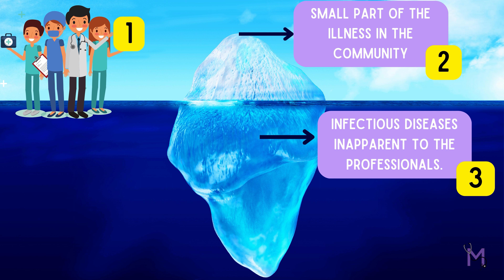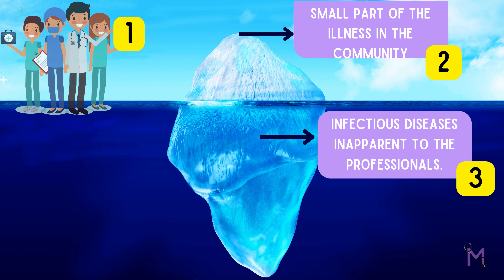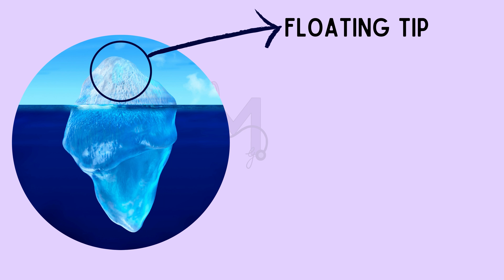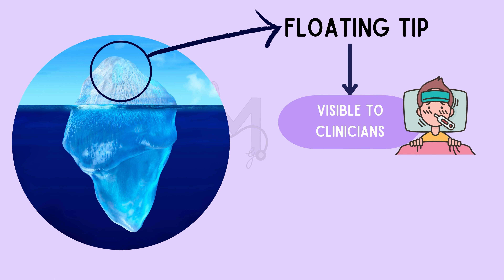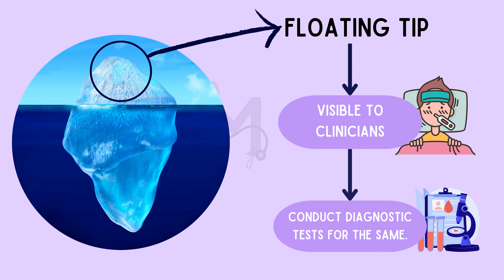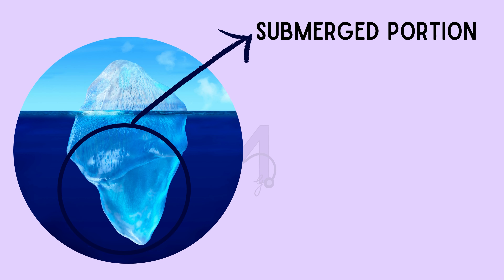Let us divide the iceberg into three parts as shown in this picture and discuss each to have a better understanding. First is the floating tip, which represents what is clinically visible to us as clinicians. The clinicians are only concerned with the tip of the iceberg and conduct diagnostic tests for the same.